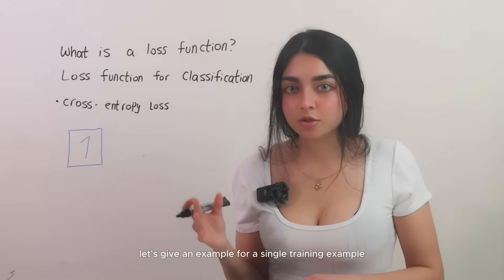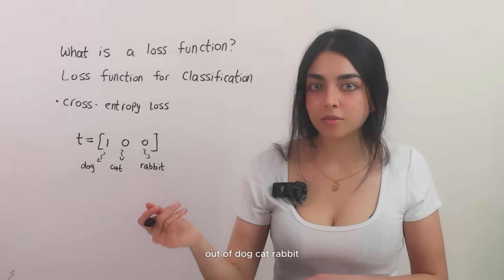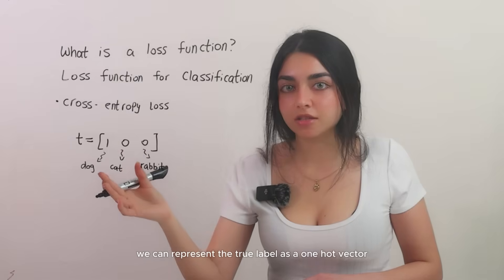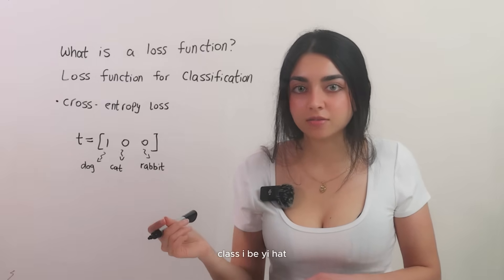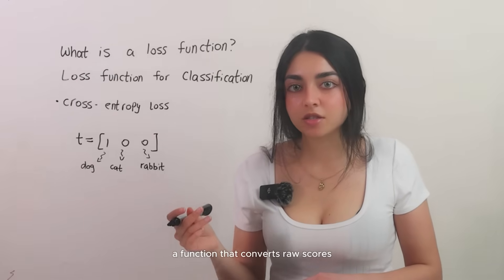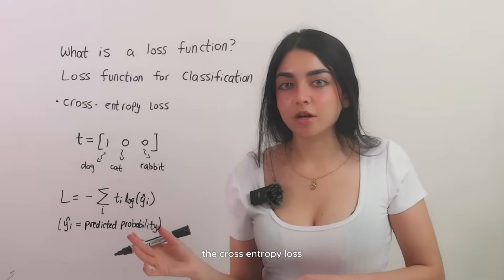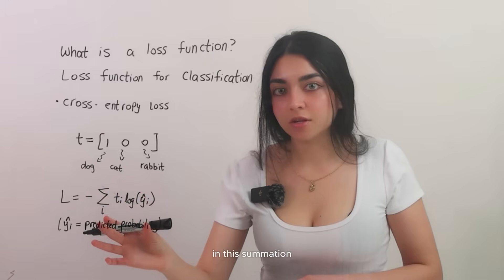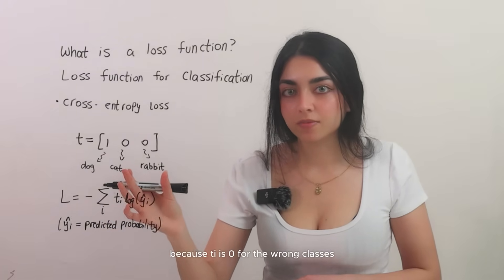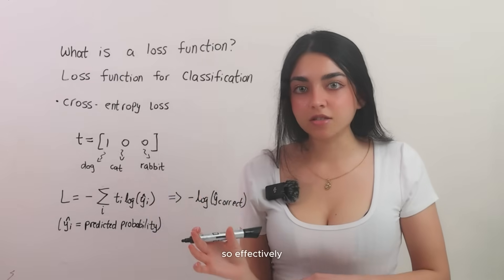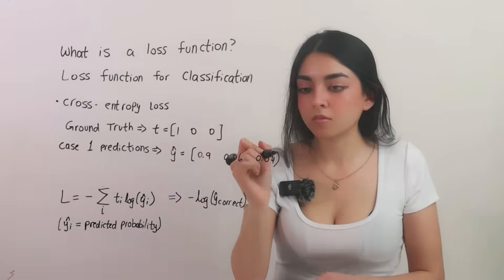Let's give an example for a single training example. Suppose the true label is a category like dog out of dog, cat, rabbit. We can represent the true label as a one-hot vector t that has 1 for the dog class and 0 for the others. Let the model's predicted probability for class i be yi hat. Usually these are the outputs of a softmax, a function that converts raw scores from neural network into probabilities. The cross-entropy loss for this example can be written as follows. In this summation, all terms are 0 except for the true class because ti is 0 for the wrong classes and t correct is 1. So effectively, the loss is the negative logarithm of the predicted probability for the correct class.